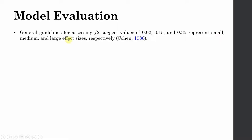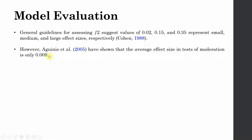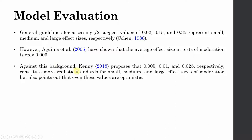However, Aguinas and others have shown that the average effect size in tests of moderation is only 0.009. Values of 0.01 and 0.025 respectively constitute more realistic standards for small, medium, and large effect sizes. It is also pointed out that even these values are quite optimistic — you may not get a very large effect size in practice.